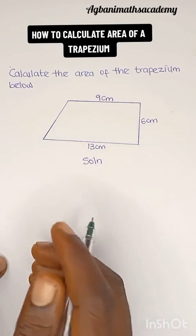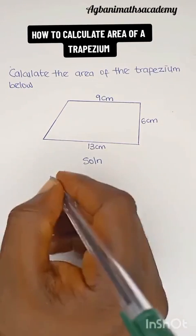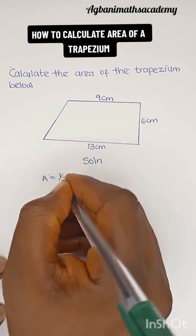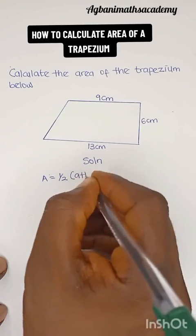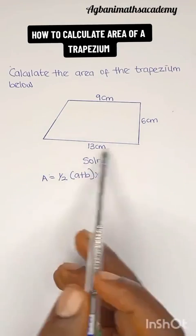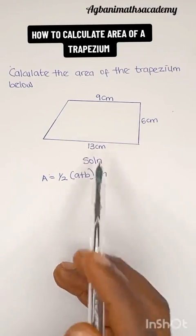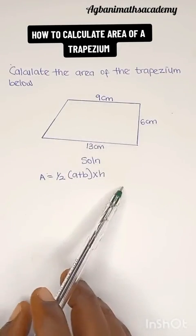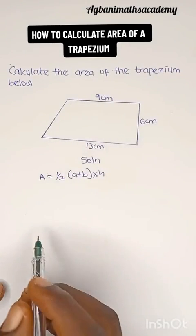Solution. The formula to calculate the area of a trapezium is A equals half A plus B multiplied by height. A is the longer length of the trapezium and B is the shorter length of the trapezium, and then the height is the vertical side.